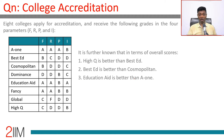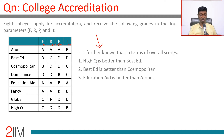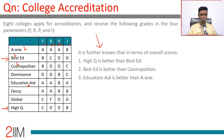Each college applies for accreditation and receives grades in the four parameters F, R, P, and I. For example, A1 gets A, A, A, B; Bested gets B, C, D, D; and so on. It is further known that High Q is better than Bested, Bested is better than Cosmopolitan, Education Aid is better than A1, and so on. Let's go step by step.